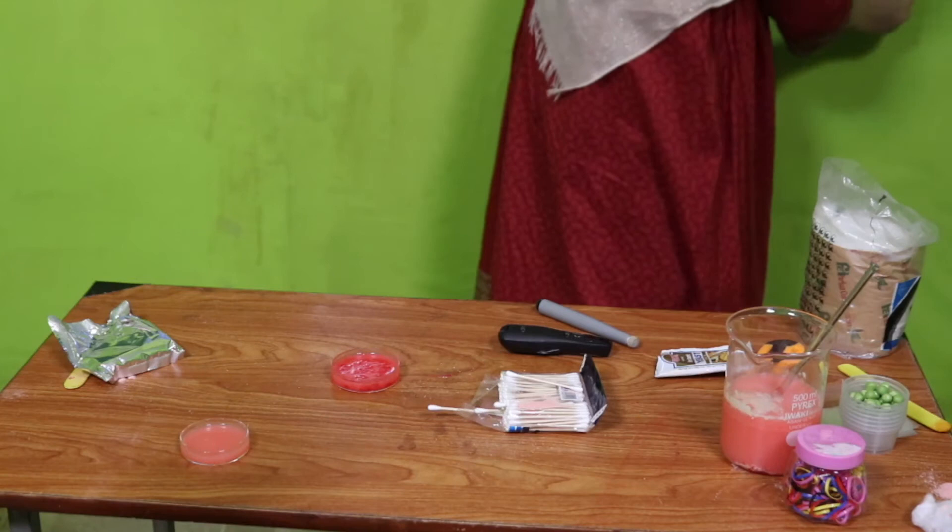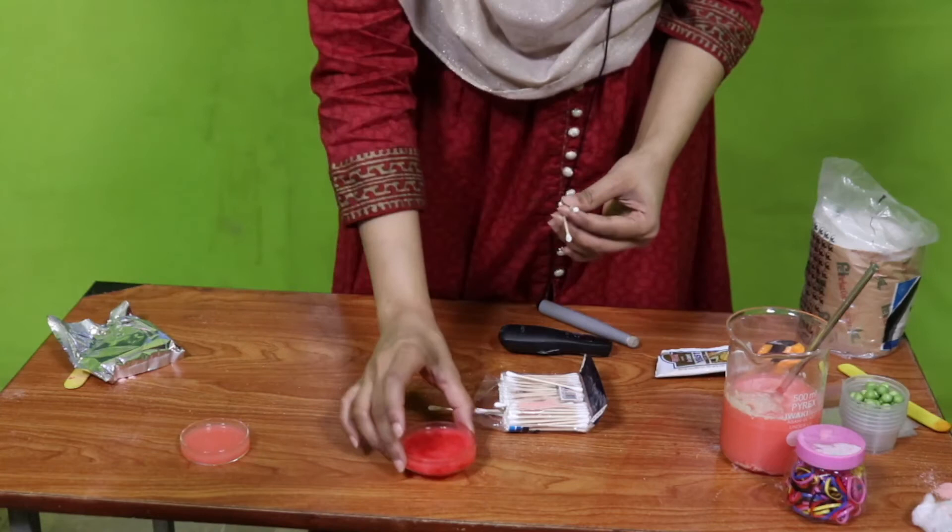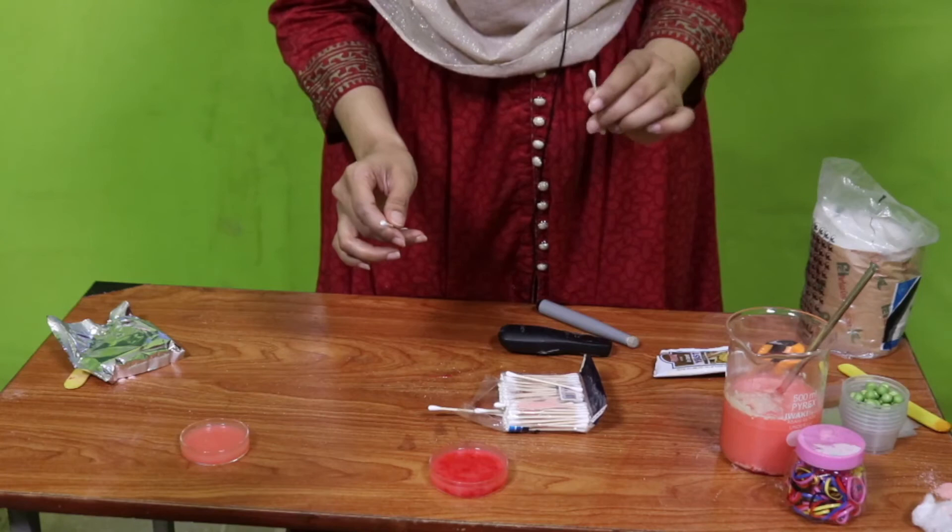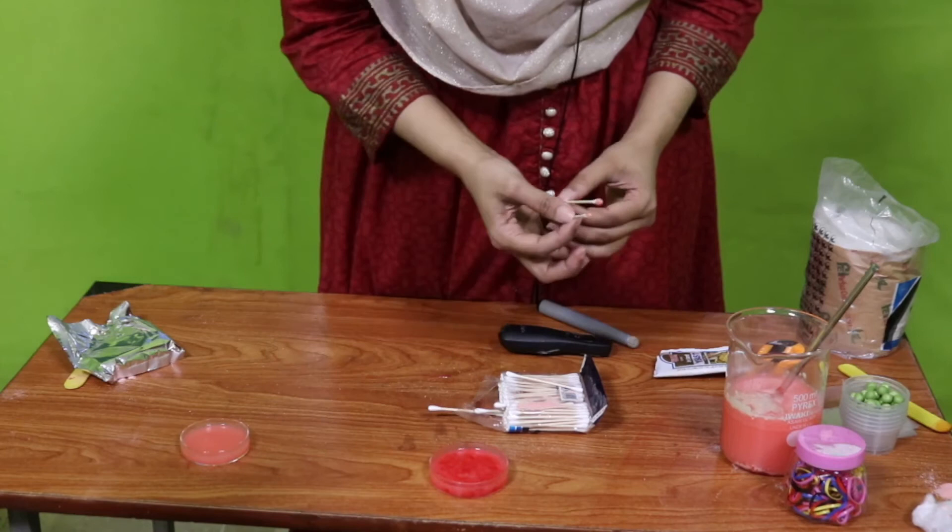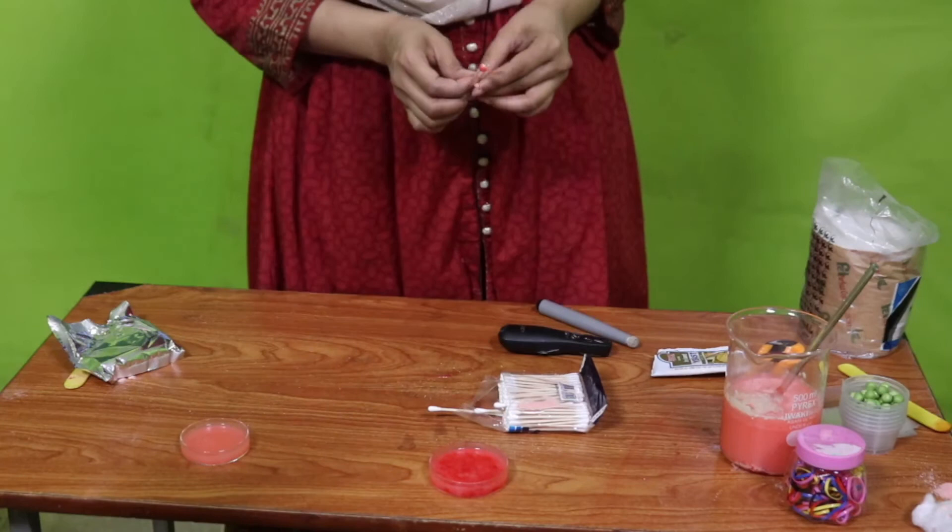Now I will make streaks of it. You can see I will make streaks of it on the agar medium. First I will take the one which I put on the table. I will make streaks here. Then with the other one which I put on the wall, and then the last clean one.